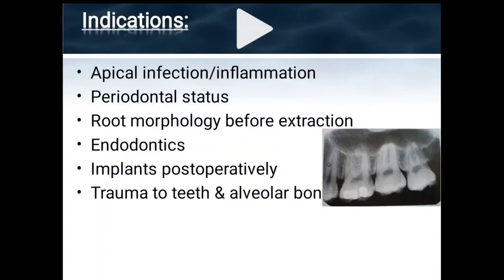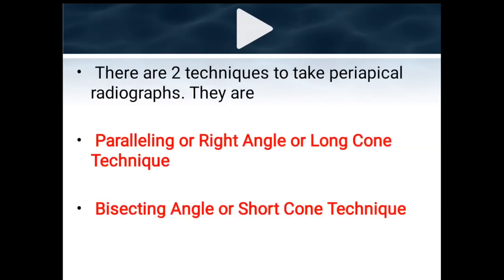Periapical radiography is indicated for periapical infection or inflammation, evaluating periodontal status, understanding root morphology before extraction, endodontic working length and apical foramen assessment, implant evaluation postoperatively, and for detailed pictures of trauma to teeth and alveolar bone. There are two techniques: the paralleling (right angle/long cone) technique and the bisecting (short cone) technique.